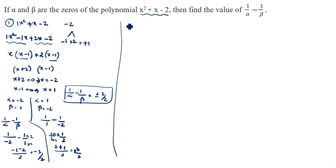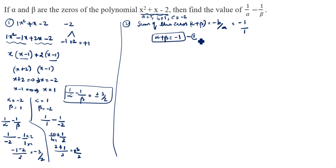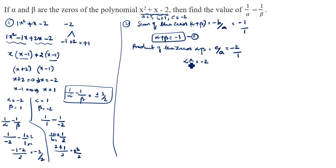This is the first method. For the second method we use the sum of the zeros and product of the zeros formula. Sum of the zeros: alpha plus beta equals minus b by a. Here a equals 1, b equals 1, c equals minus 2. So alpha plus beta equals minus 1. Product of the zeros: alpha times beta equals c by a equals minus 2 by 1, so alpha beta equals minus 2.